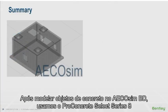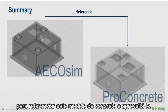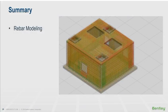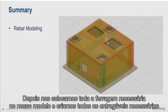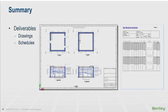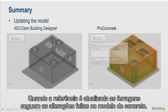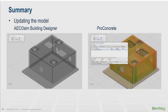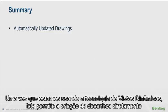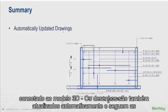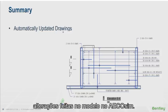Let's recap. After modeling concrete objects in Ecosim Building Designer, we used Pro Concrete Select Series 8 to reference that concrete model and reuse it — a step that was really quick and saved us a lot of time. We placed all necessary reinforcement and created all necessary deliverables like drawings and schedules. We also managed to handle changes done in the Ecosim model: when the reference was updated, geometry and rebar followed the changes. Because we are using Dynamic Views technology — which creates drawings directly connected to the 3D model — the drawings were also updated automatically.